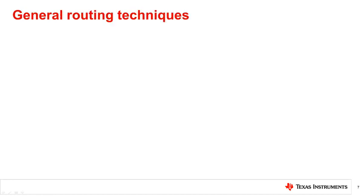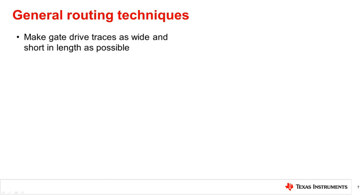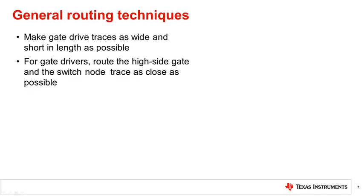Here are important routing techniques for designing a motor driver PCB layout. Make sure gate drive traces are as wide and as short as possible — starting with a trace width of 20 mils for at least 1.5 ounce copper plating thickness and increasing the width for higher currents is recommended. For gate drivers, route the signal trace of the high side gate and the switch node trace as close as possible to minimize inductance, loop area, and noise caused by fast changes in voltage induced by switching. For motor drivers with integrated FETs, this routing is optimized internally.